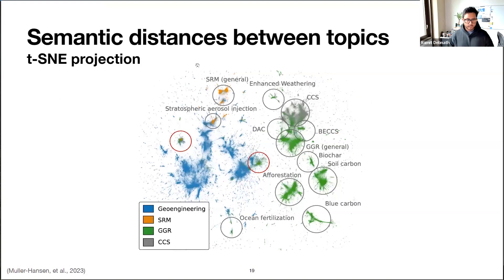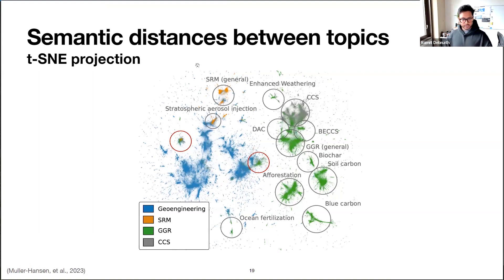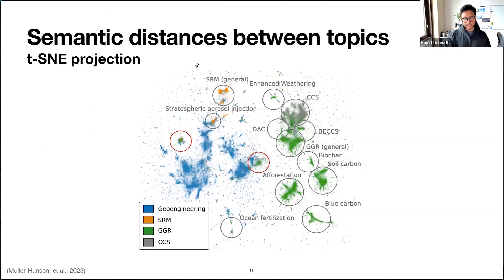When projecting all the tweets using t-SNE — reducing the dimensions of millions of tweets into a 2D plane — you can see the overlap and who dominates the conversation. The blue dots representing geoengineering are everywhere, which is why a lot of these technologies still have much polarization and misinformation. Some are quite separate, like afforestation, GGR in general, and CCS — there are certain echo chambers immune to the blue dots. This is a very exploratory way of understanding these interactions.